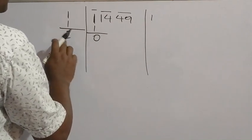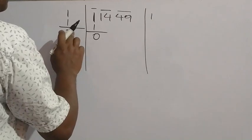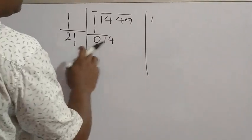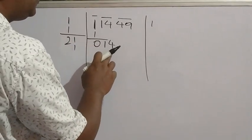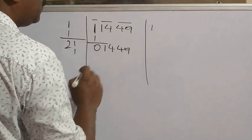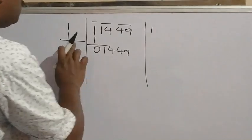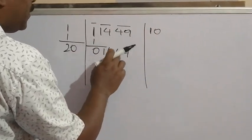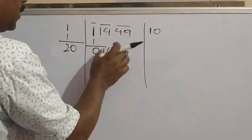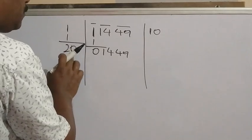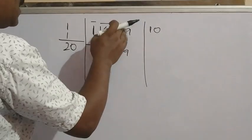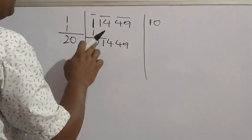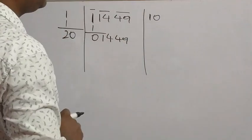Now it is a 2-digit number: 2_, unit digit vacant. Bring down the next pair 14. If unit digit 1 is put: 21 × 1 = 21, which is greater than 14. So it is not divisible. We have to bring down the next pair 49. At a time 2 pairs are being brought down, so we put 0 in the divisor and 0 in the quotient. Now the number is 1449 and divisor position is 20_.